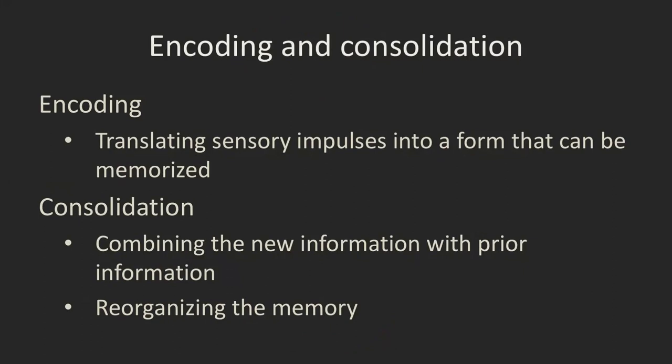What is encoding? Everything we experience — what we see, read, hear, feel, smell — has to be translated from a sensory impulse into a form that can be memorized. Our working memory does a lot of that encoding. Once encoded, the information has to be consolidated with other new information and information we already knew, and then reorganized in our brain. This process is called consolidation.